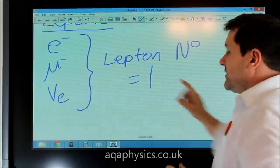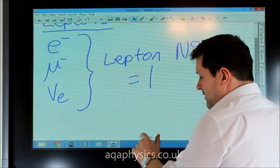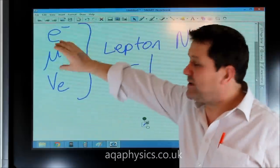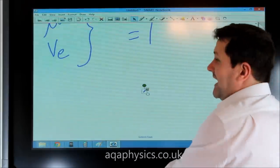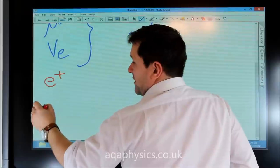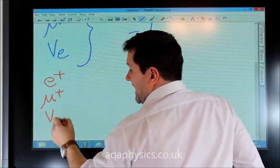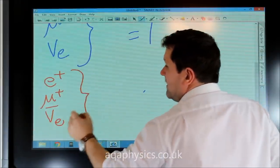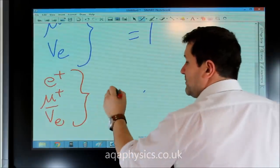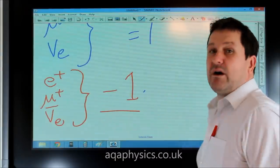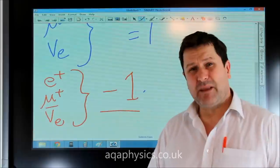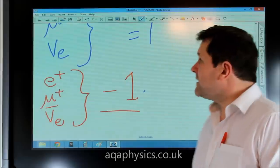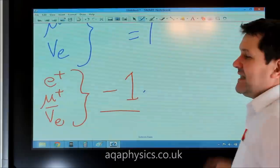Leptons also have corresponding antiparticles. So as well as having the electron, the muon, and the neutrino, you've also got antiparticles: the positron, the antimuon, and the antineutrino. These have the opposite charge but also the opposite lepton number — the lepton number equals minus one. So a positron has a lepton number of minus one because it's an antilepton. Those six leptons are all we really need to worry about.